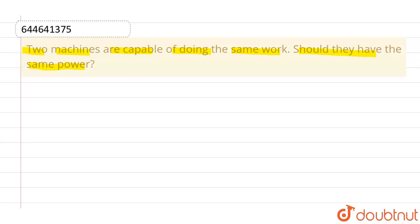So the answer to this particular question is no. Now let us suppose we are having two machines, machine A and machine B. They are capable of doing the same work, so let's say they have done the same amount of work W.